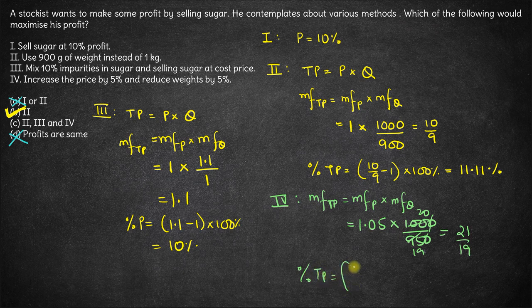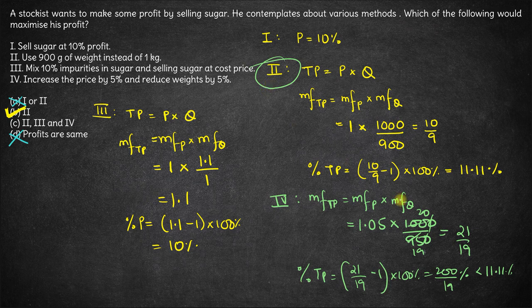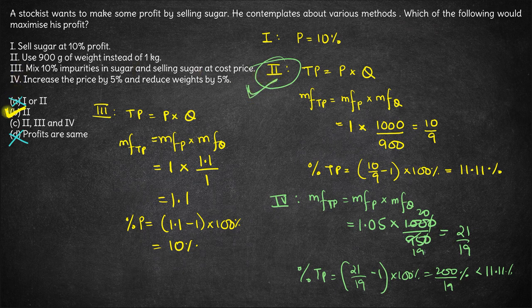The percentage change in total price is (21/19 − 1) × 100%, which comes out to 200/19%. Now, 200/19% is approximately 10.53%, which is definitely less than 11.11% from option 2. Option 2 so far was the highest. Hence, of all four options, option 2 gives you the highest percentage profit, and option B is the right answer. Thank you.